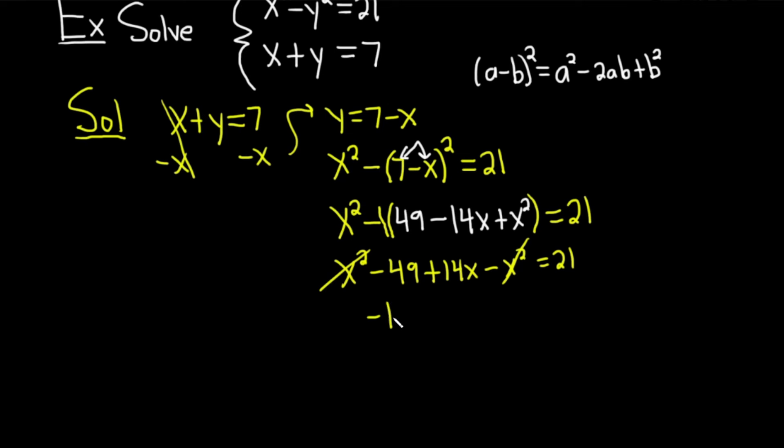We have negative 49. There we go, negative 49, it's exciting. Plus 14x equals 21. And we need to solve for x. So we'll add 49 to both sides, so plus 49 plus 49.